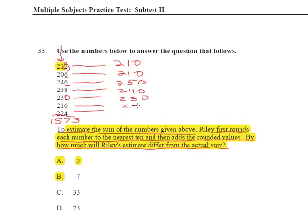216, that's going to be 220. And then finally, 224, that's going to be 220, because 4 is less than 5.